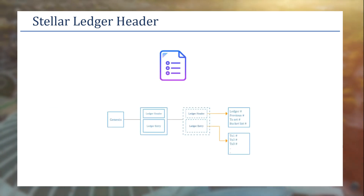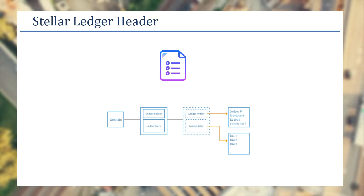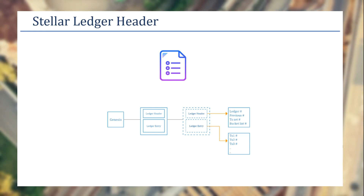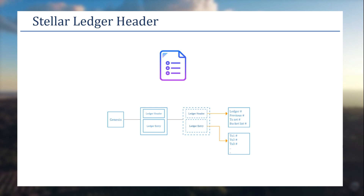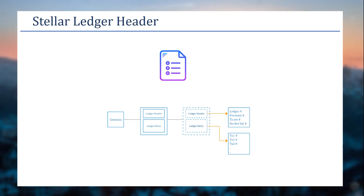Inside the Stellar ledger header there is a ledger hash, previous hash, transaction hash, and a bucket list hash. The bucket list hash stores all transaction-related data organized into buckets grouped into a bucket list, from which hashes are formed. The bucket list is mainly used when a node goes out of sync — when it syncs again, it doesn't need to retrieve every piece of transaction data individually; it can get the bucket list, find all the hashes, and perform the needed validations.